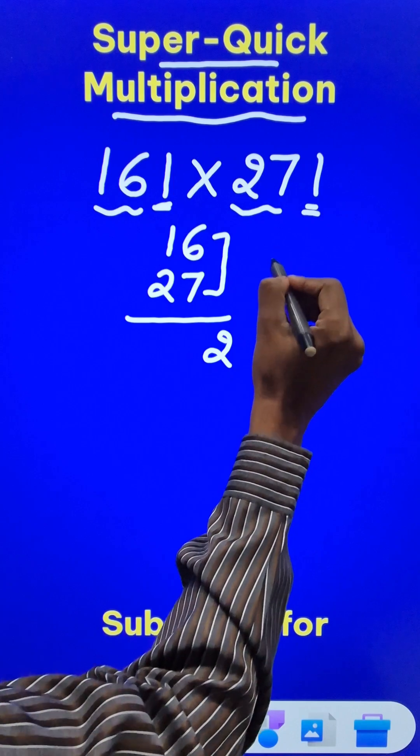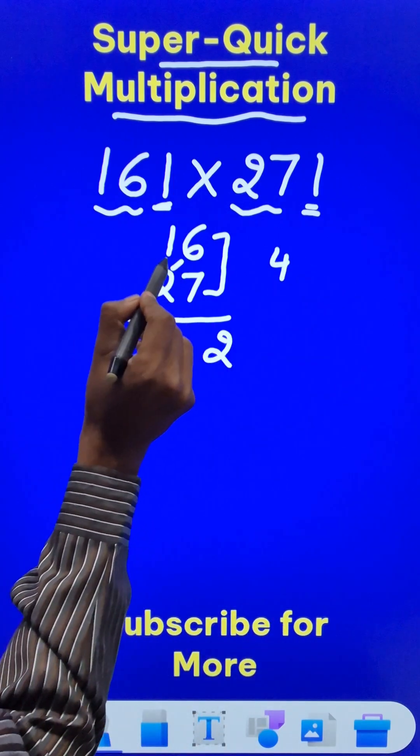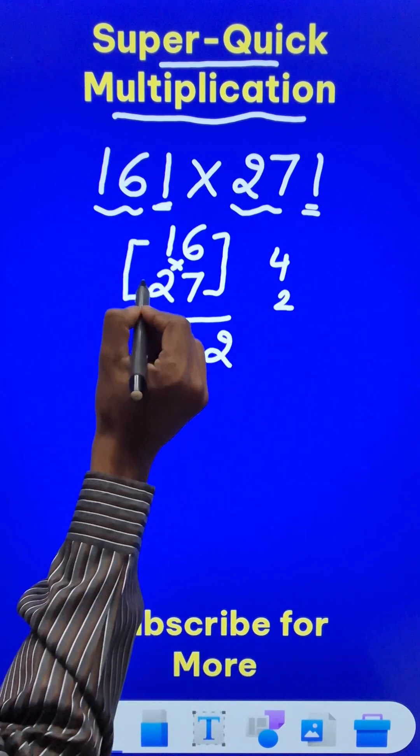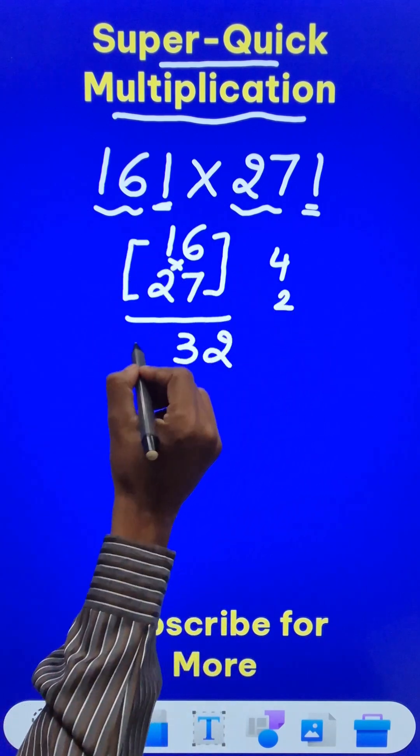7, 6 are 42, so 2 and a 4 carry. Then crosswise, 12 and 7, 19 plus 4, 23, so 3 and a 2 carry. And then we have 1, 2s are 2 and 2 plus 2, 4.